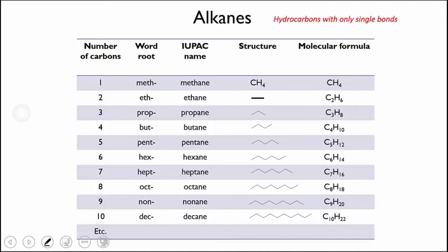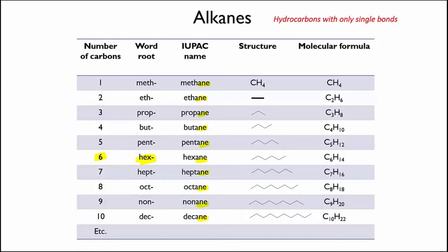For instance, if you have a molecule that involves a chain of six carbons, then "hex" is going to be in the name somewhere. Second, note that all the names end in "-ane". This suffix "-ane" indicates that these molecules are alkanes — in other words, that they have only single bonds in them.